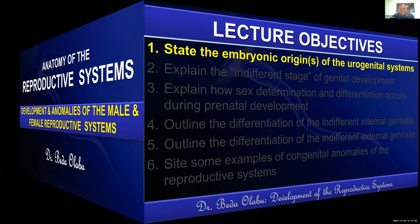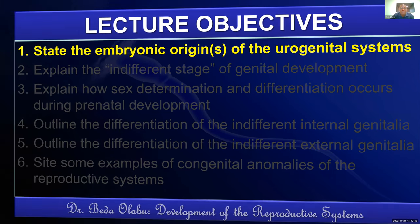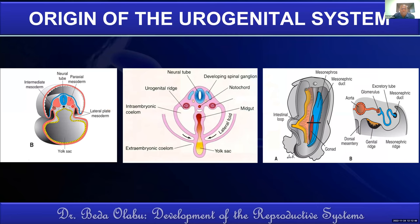One of the key agendas you needed to address in this lecture is the embryonic origin of the urogenital system as a whole. To answer that question, remember that both the urinary system as well as the reproductive systems originate from the intermediate mesoderm. On that intermediate mesoderm we have a swelling called the urogenital ridge, which represents the future urinary system as well as organs of the reproductive system.